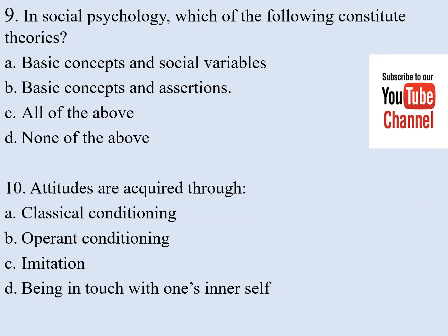Number nine. In social psychology, which of the following constitutes theories? a) basic concepts and social variables, b) basic concepts and assertions, c) all of the above, d) none of the above. The correct answer is b — basic concepts and assertions.